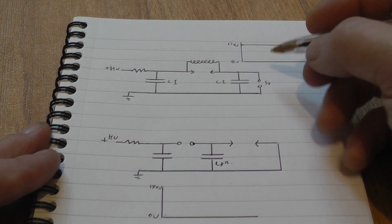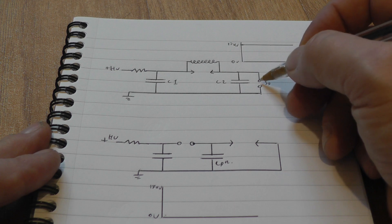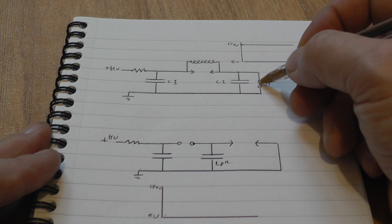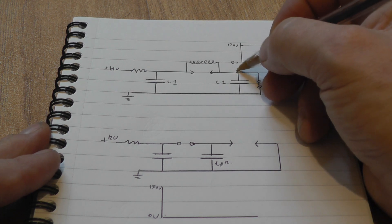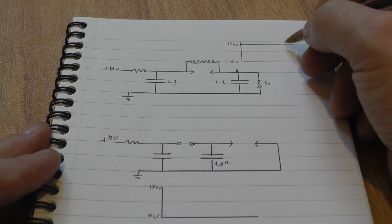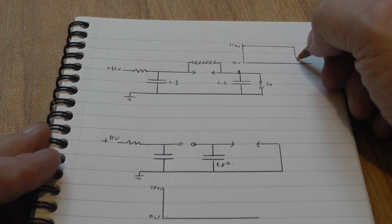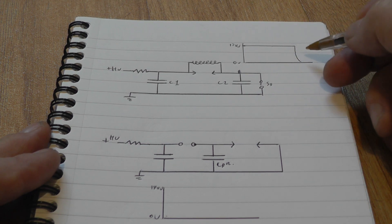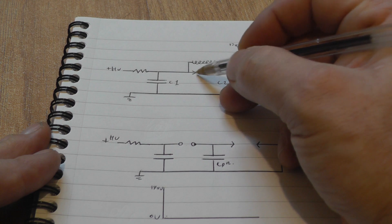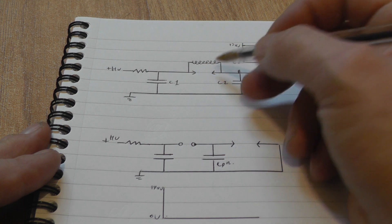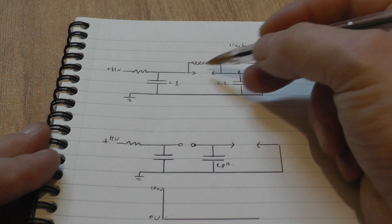The idea is that when the spark gap fires it essentially shorts out this capacitor. If we were to measure the voltage here, we'd expect that we'd start off with like 17,000 volts, and the idea is to get the voltage to drop as sharply as possible on this side to give us an abrupt potential difference across the channel, which will pump the nitrogen molecules.